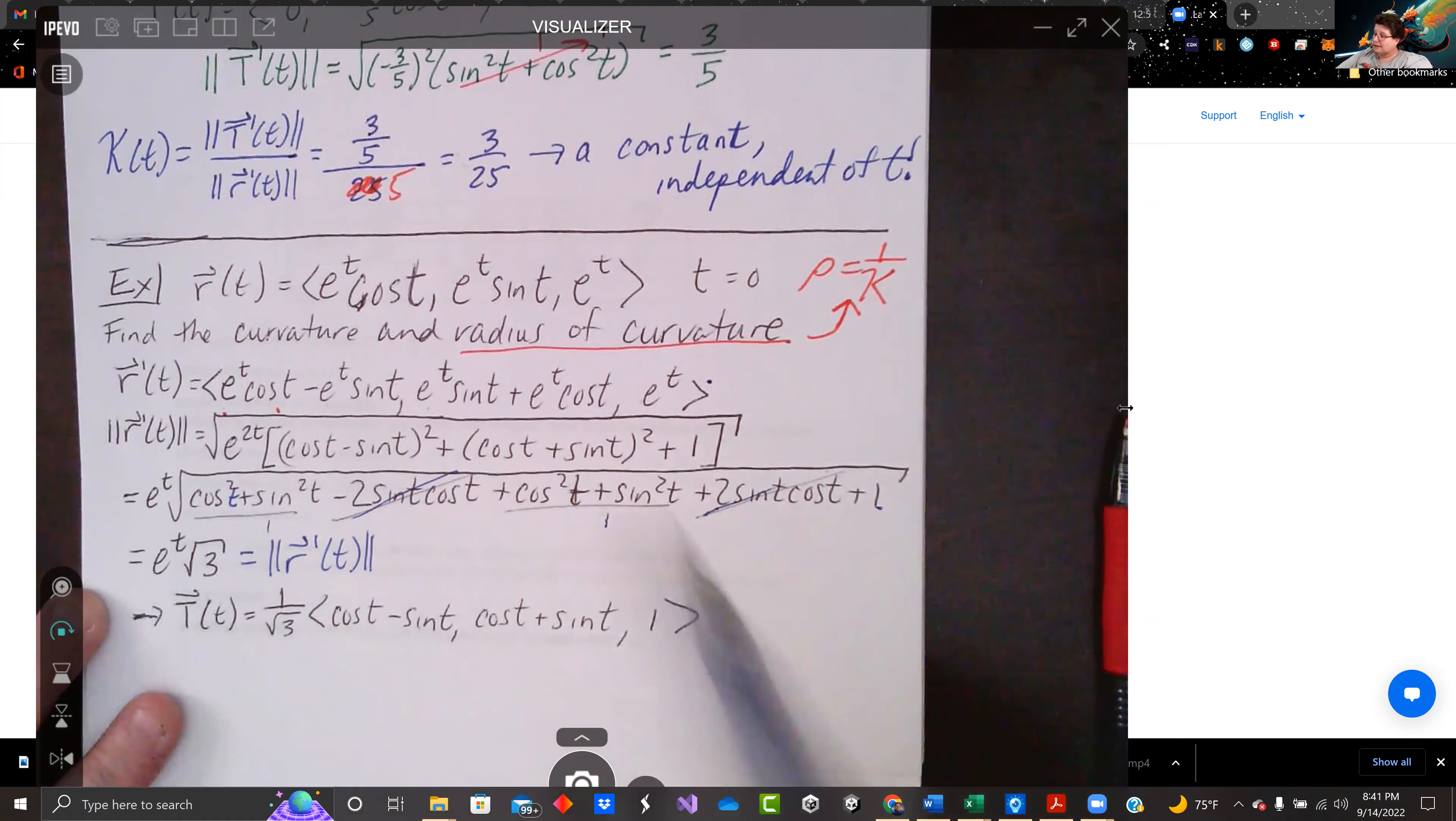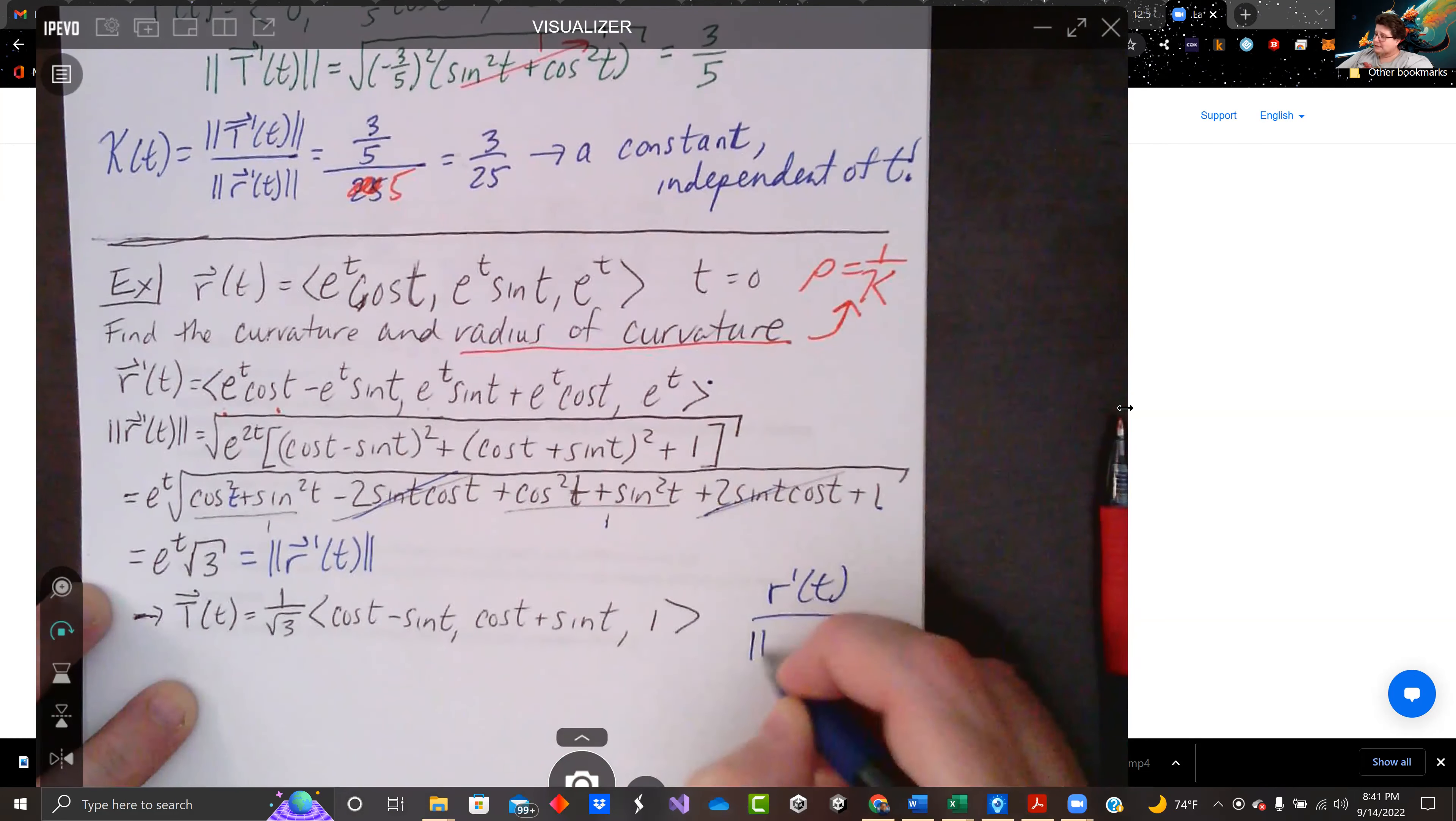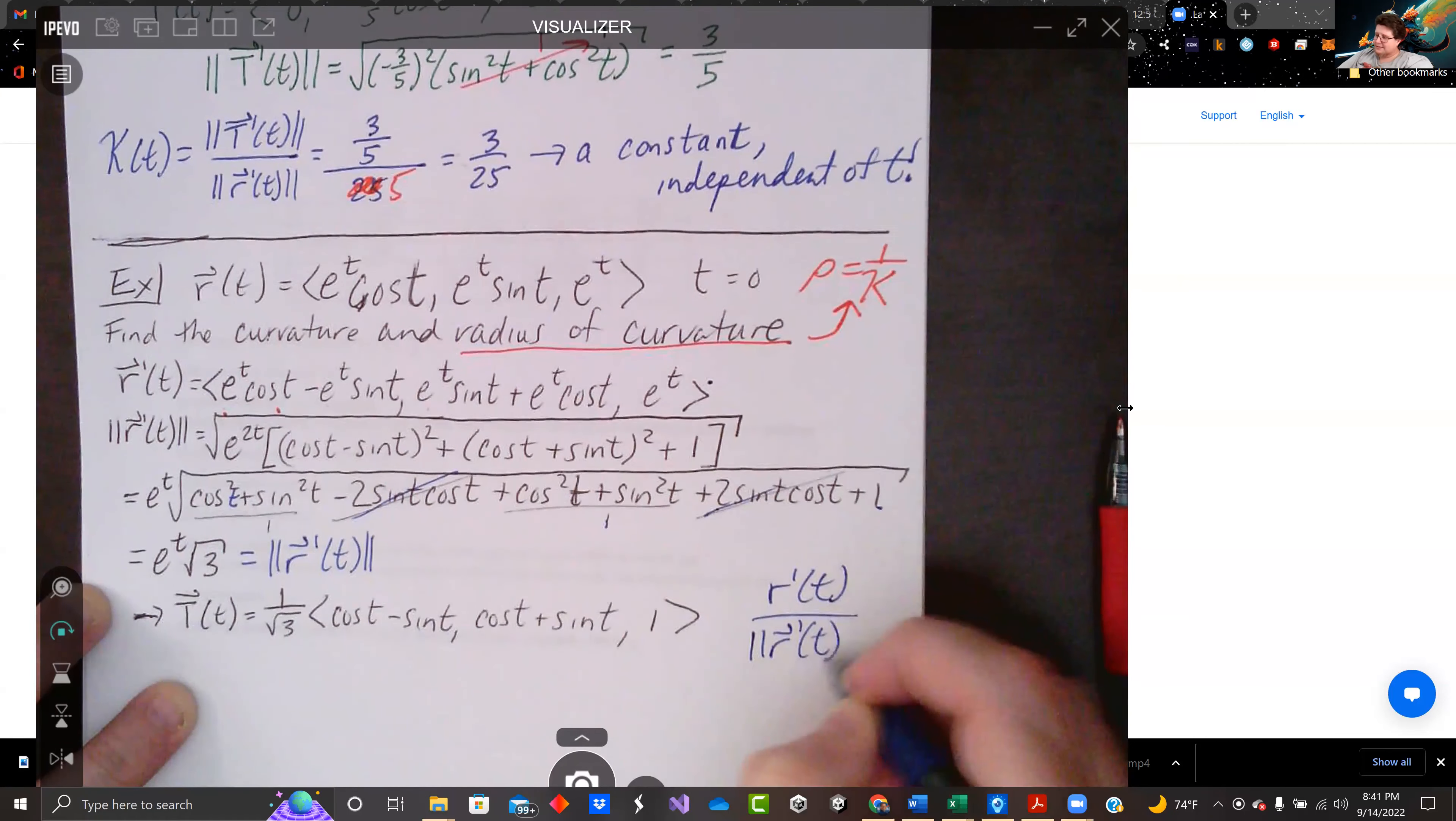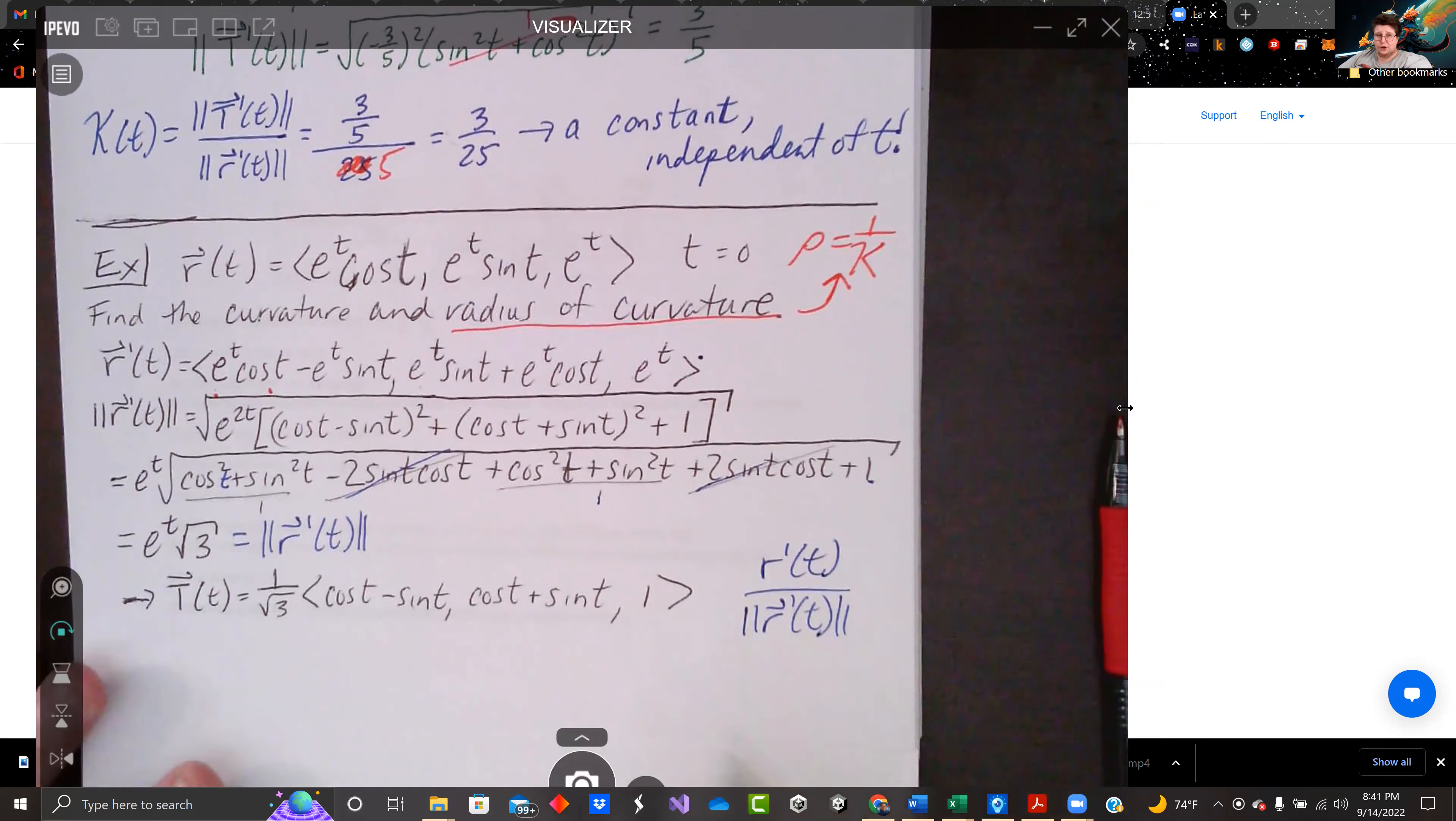Let's divide by that. r prime of t over the magnitude of r prime of t. Really good stuff here. Tangent ended up being helpful here. And so we still have it.